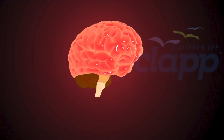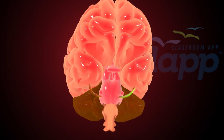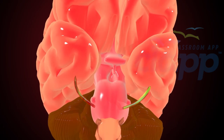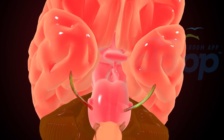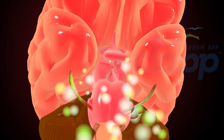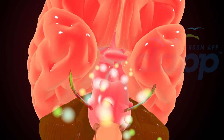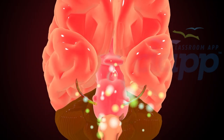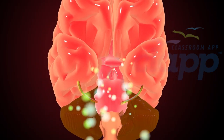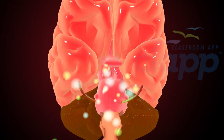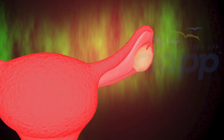In a normal menstrual cycle, the brain makes the hormone GnRH, which travels into the pituitary gland. The pituitary gland then releases two hormones: FSH, follicle-stimulating hormone, and LH, luteinizing hormone, which travel in the bloodstream to the ovary.